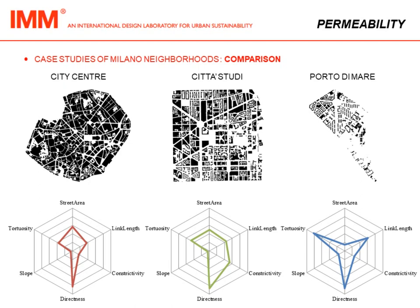This slide shows the possibility of reading together the maps and the diagram and making some observations. For example, the street area value is much lower in Porto di Mare because of the presence of very large voids, such as a huge park on the lower part of the site. The link length value is higher in Porto di Mare than in the other cases because of the larger block dimensions and consequently the greater distances between intersections.